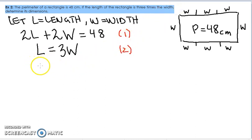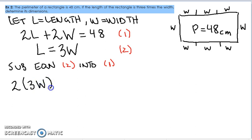So right now we have L is equal to 3W. I'm going to go ahead and use the substitution method. I'm going to sub equation number 2 into equation 1. So anywhere I see an L, I'm going to replace it with 3W. So 2 lots of 3W plus 2W is equal to 48. I can tidy this up. 2 lots of 3W, that's just 6W. So 6W plus 2W is equal to 48.